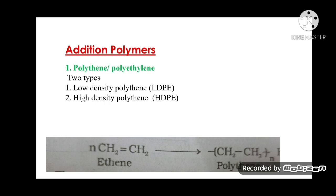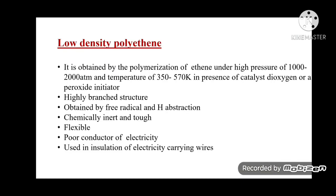Addition polymer examples — polyethylene has two types: low density polythene (LDP) and high density polyethylene (HDPE). Low density polyethylene is obtained by polymerization of ethene under high pressure of 1000 to 2000 atm and a temperature of 350 to 570 K in the presence of a catalyst or peroxide initiator. It is highly branched, obtained by a free radical mechanism, chemically inert, tough, flexible, a poor conductor of electricity, and used in insulation of electricity-carrying wires.